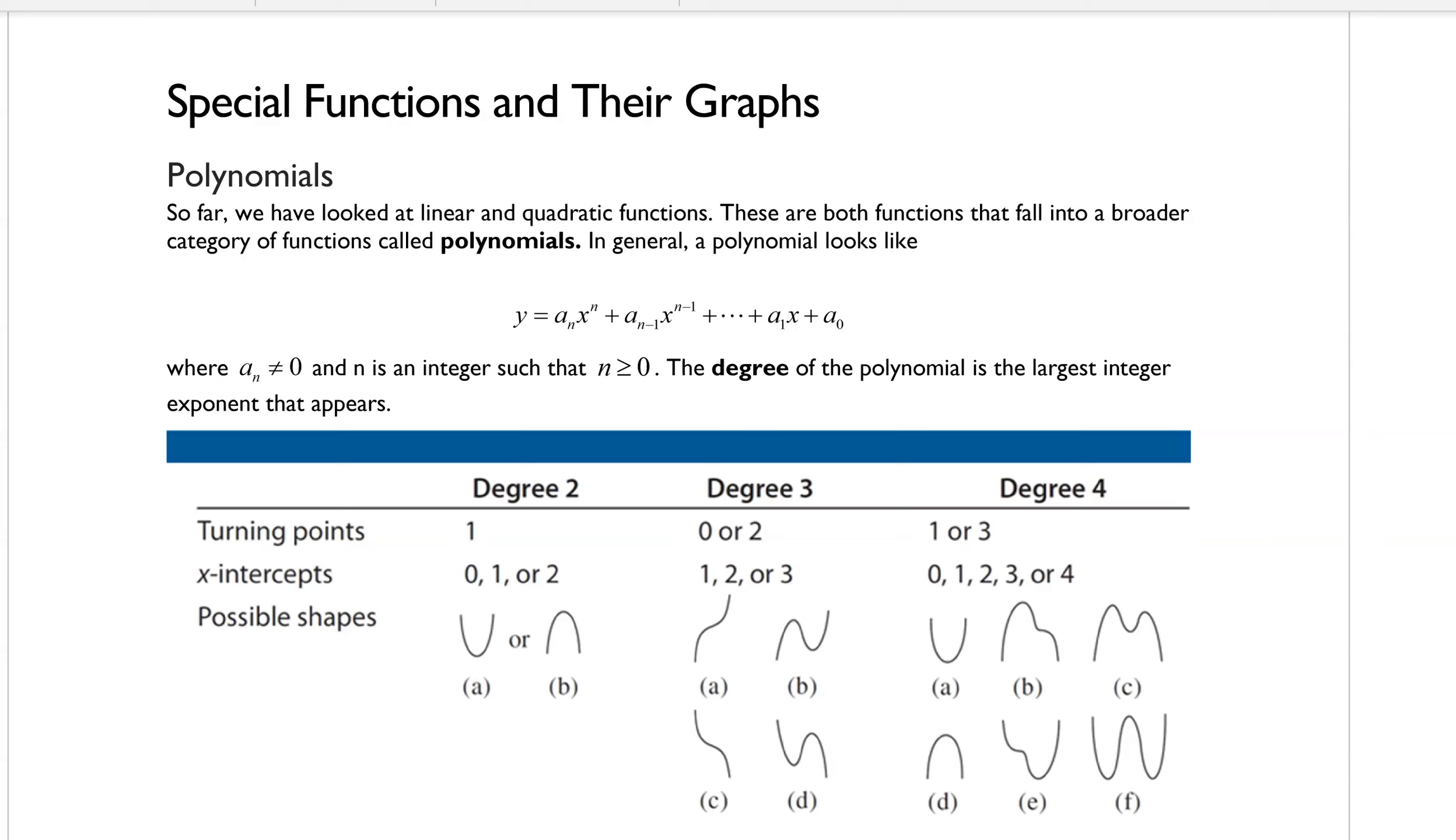it just so happens that both of these functions fall into a broader category of functions called polynomials. In general they look like this, and I know that looks really intimidating, but like I said earlier, we've actually dealt with polynomials, we just weren't calling them polynomials. So an example would be any kind of quadratic, like negative one-fourth x squared plus three x minus two, that's an example of a polynomial, and more specifically that's a quadratic.